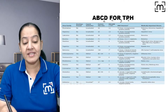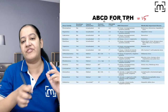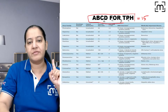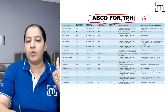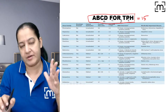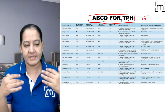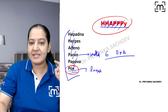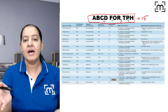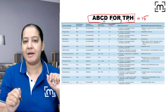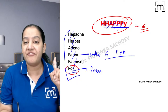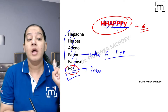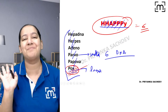RNA viruses have 15 families, not six. The mnemonic for learning the RNA virus families is 'ABCD for for Tweet per hour TPH.' We already discussed the full form yesterday. So DNA viruses are six families having multiple members, and RNA viruses have 15 families having multiple members. Today we start detailed study of the first DNA virus — pox virus.